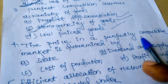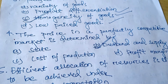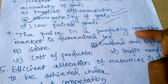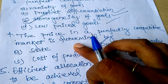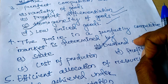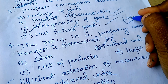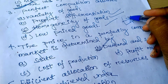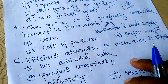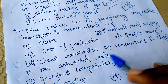The price in a perfectly competitive market is determined by state, demand and supply, cost of production, and profit margin. You have to choose demand and supply only — in a perfectly competitive market, price is determined where the demand curve and supply curve interact with each other. This is called the point of equilibrium.